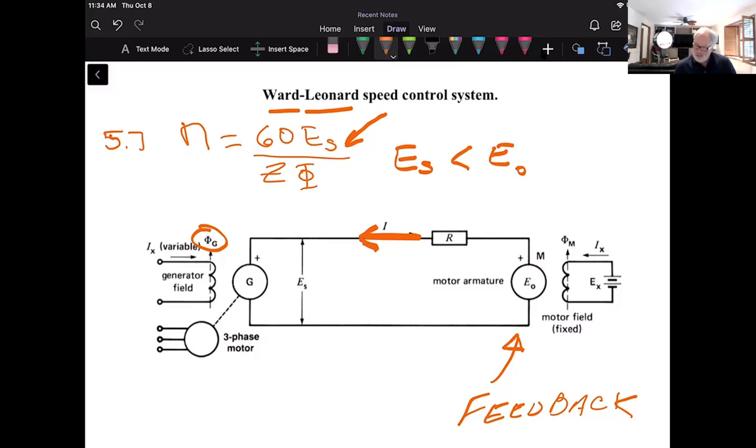And now this armature of this motor is delivering power to the generator. Okay, so we went from a situation where the motor was absorbing power, producing a positive torque, to a situation now to where it's delivering power, and we're going to call that a negative torque. In effect, the DC motor suddenly has become a generator. It's delivering power. And the generator suddenly becomes a motor because it's absorbing power.